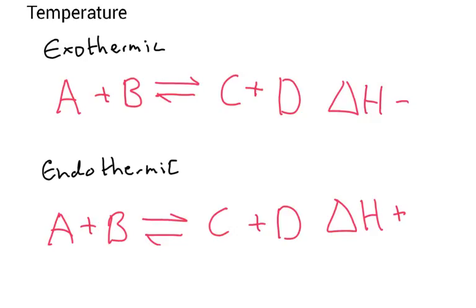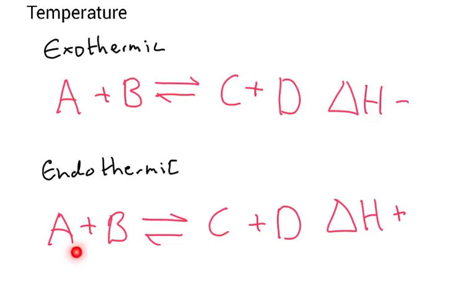In an endothermic system, if I increase the temperature, remember that an endothermic system wants energy to move from left to right. So if I increase the temperature, the equilibrium position will move towards C and D, away from A and B. But if I reduce the temperature, the equilibrium position will actually move towards A and B, because taking energy out of the system shifts it back.